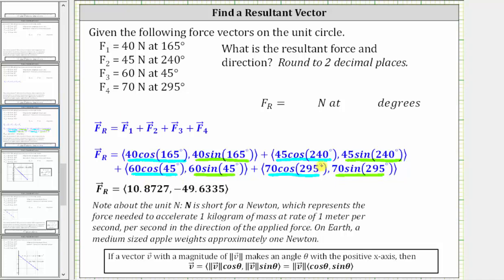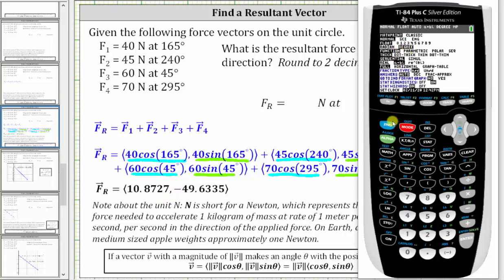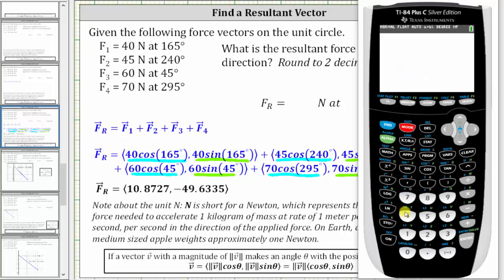So now we need to add the x and y components on the calculator in degree mode. And we'll go ahead and show this. The calculator is already in degree mode. To add the x components, we enter 40 cosine 165 plus 45 cosine 240 plus 60 cosine 45, and finally, plus 70 times cosine 295. Enter. To four decimal places, we have 10.8727.